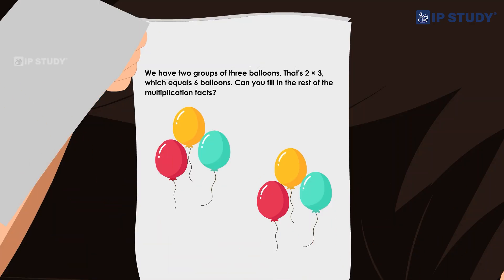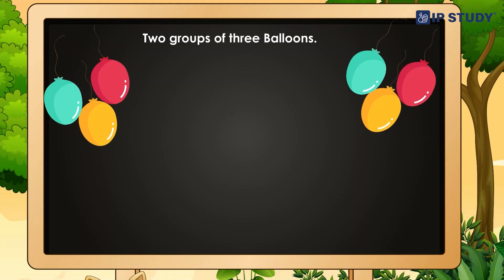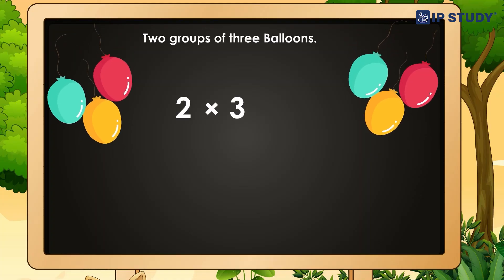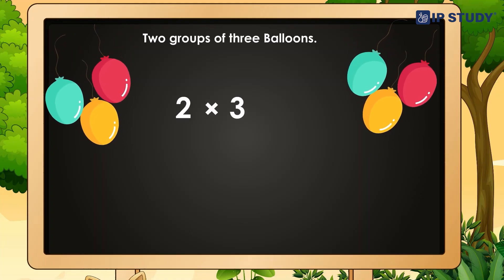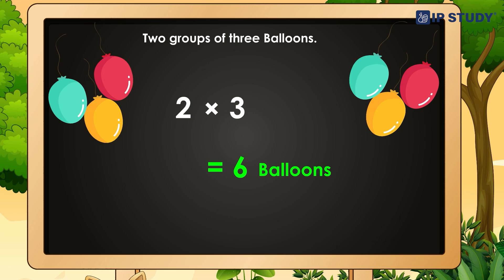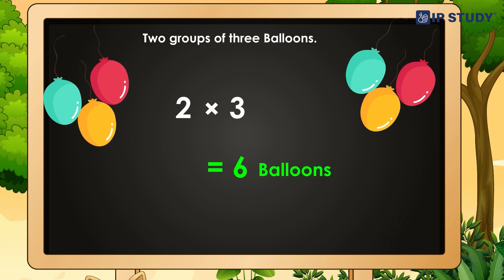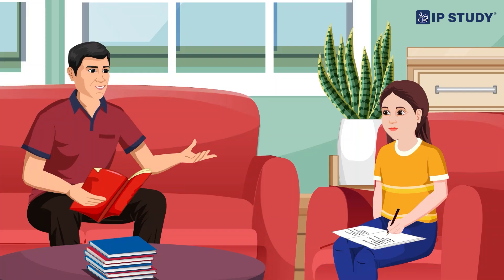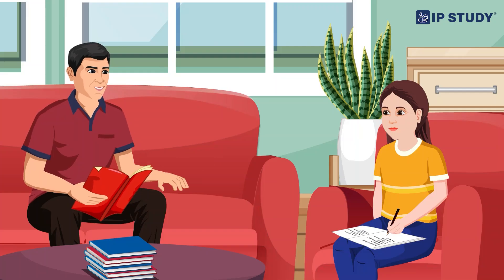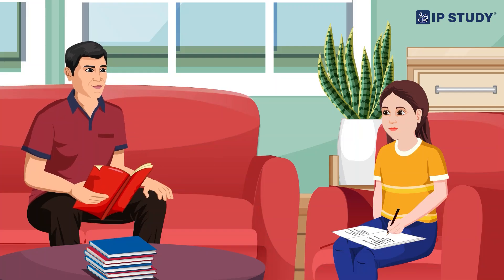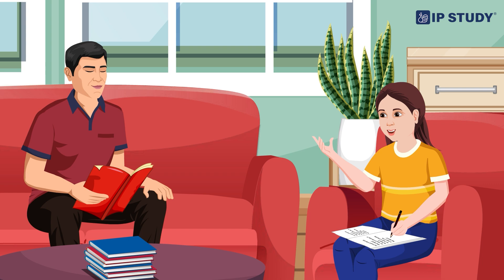Look here Urvashi, we have two groups of three balloons. That's two times three, which equals six balloons. Can you fill in the rest of the multiplication facts? Yes sir!